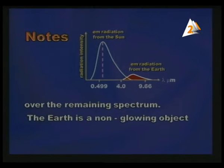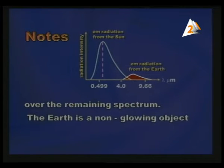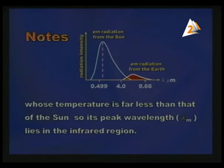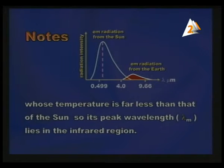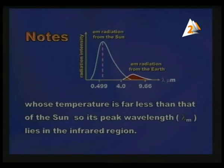The earth is a non-glowing object, unlike the sun. Its temperature is much less, so its peak wavelength — lambda maximum — lies in the infrared region. Both the sun and the earth are considered as black bodies for this comparison.